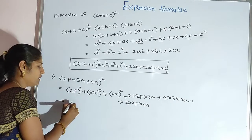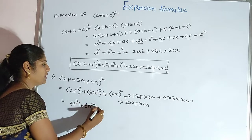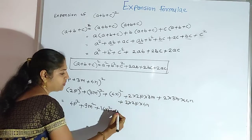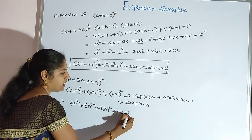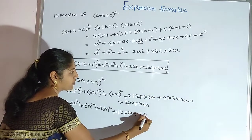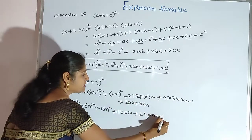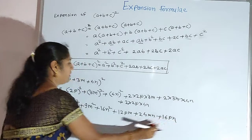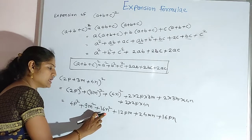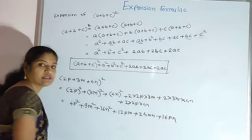Simplifying: 2p squared equals 4p square, 3m squared equals 9m square, 4m squared equals 16m square. Then 2 into 2 into 3 equals 12, giving 12pm. Then 2 into 3 into 4 equals 24, giving 24mn. Then 2 into 2 into 4 equals 16, giving 16pm. Answer: 4p square plus 9m square plus 16m square plus 12pm plus 24mn plus 16pm.